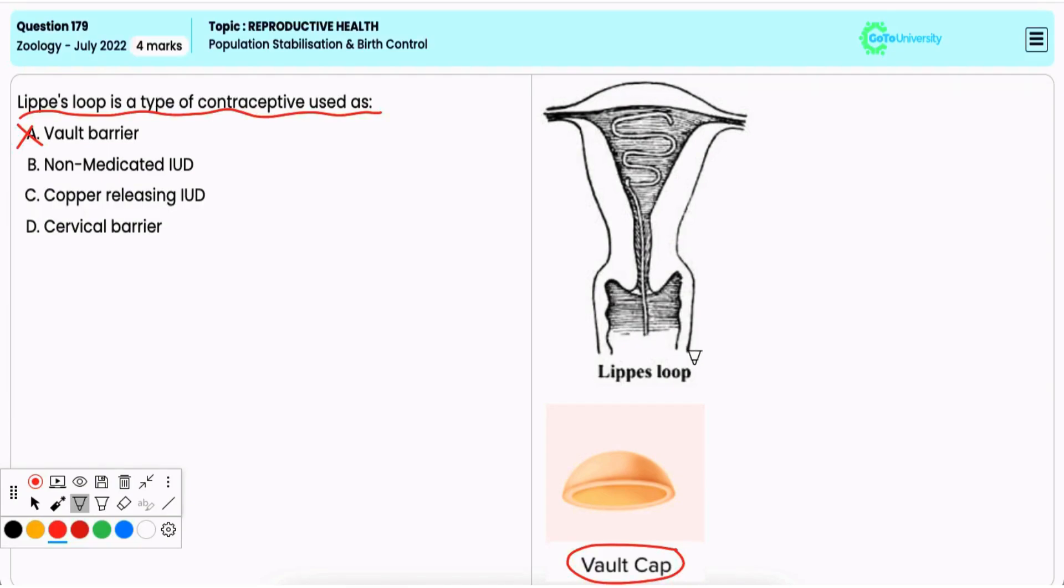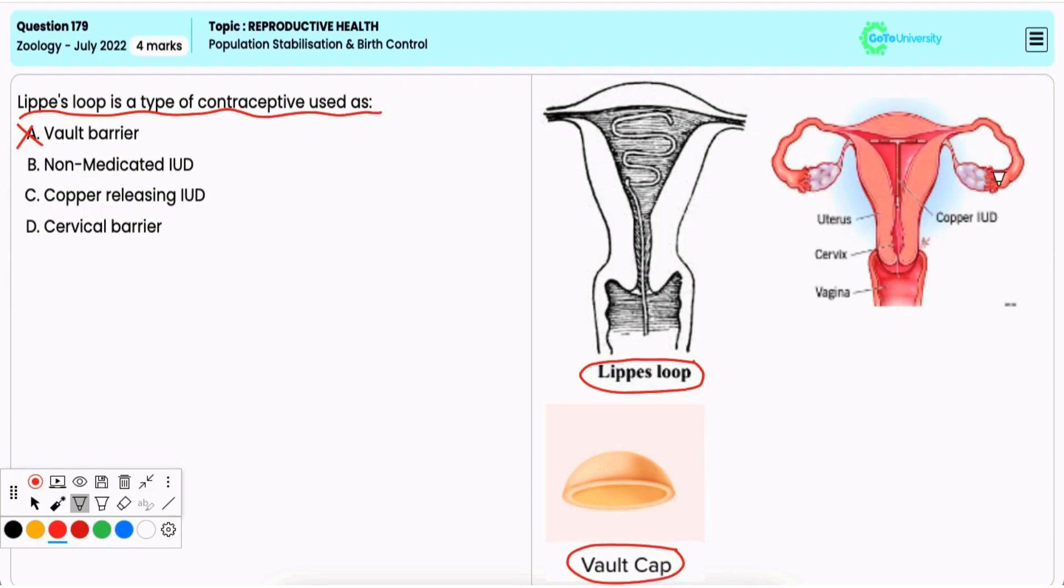Now Lippes loop is not a barrier method. Option B: non-medicated IUD. Lippes loop is a non-medicated intrauterine device, that is IUD, which is inserted into the uterus to prevent pregnancy. It works primarily by preventing sperm from fertilizing an egg. Hence it is the correct option.